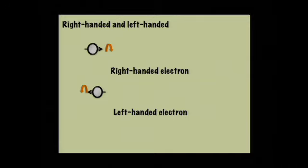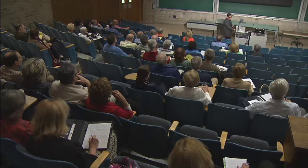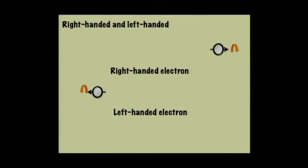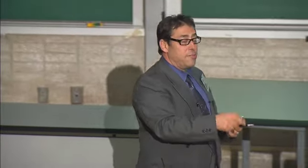We call a particle right-handed, for example an electron, if when it's spinning in one direction its spin arrow is pointing the same direction it's moving. If the spin arrow is pointing to the left but it's moving to the right, we call it left-handed instead of right-handed. So electrons can be right-handed or left-handed depending on whether their spin is lined up or opposite to the direction they're moving.